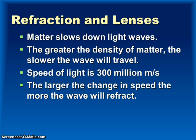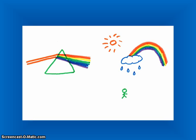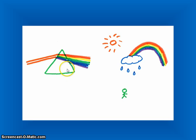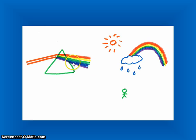If you have something even denser, like a diamond, that light will travel even slower and will bend even more. When light travels through a glass prism, it slows down and refracts. Red light refracts the least and bends the least, then orange will bend more, then yellow, then green, then blue, then indigo, and then violet will bend the most.